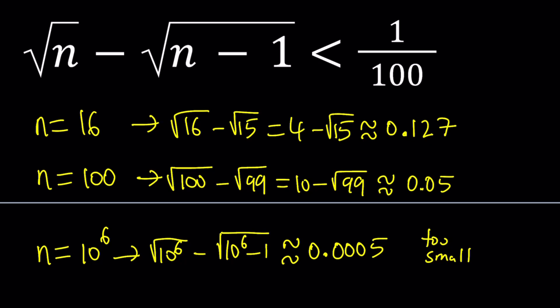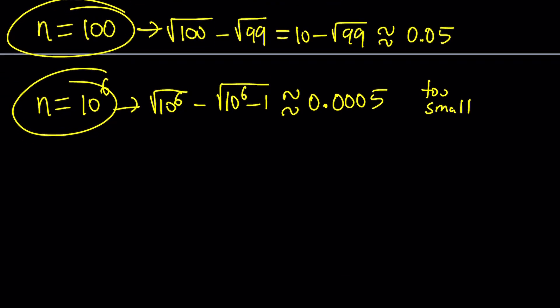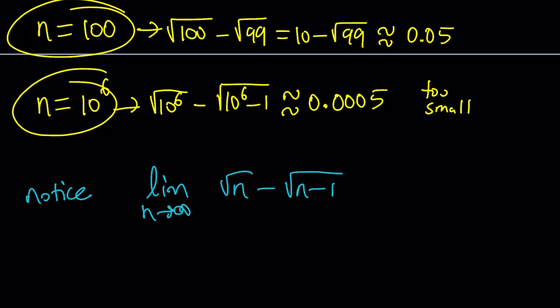So somewhere in between lies our solution. There's definitely a tipping point between this number and that number that gives us what we want. First of all, I want you to notice that the limit as n approaches infinity of the difference, square root of n minus the square root of n minus 1, is 0.